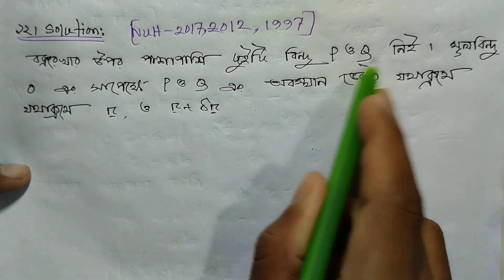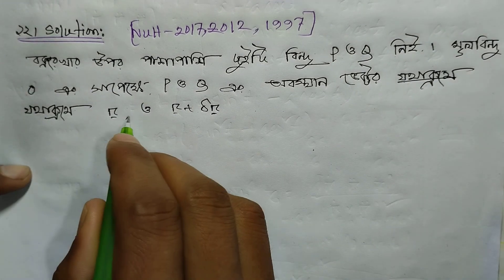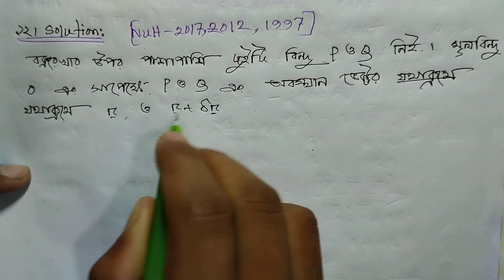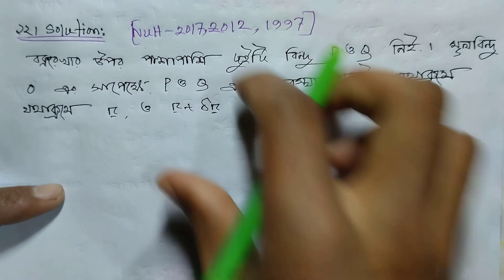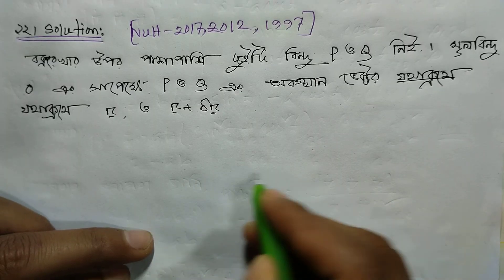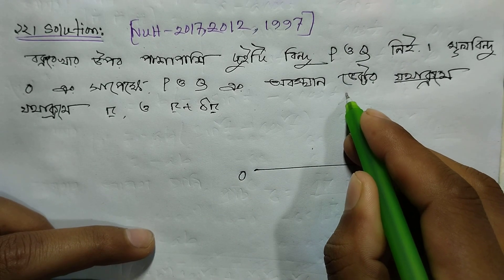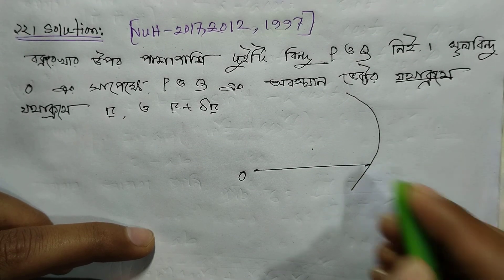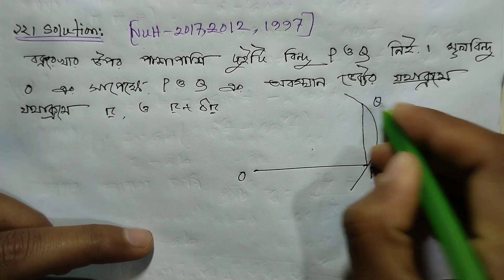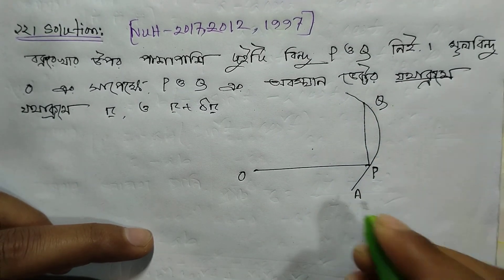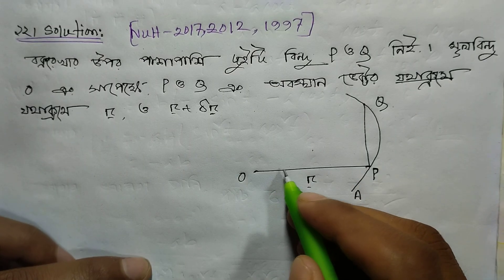We have written that on the curve there are two points P and Q, and the origin O. The shape of this curve has been given a name. The distance from the origin O to point P is R, and the distance from the origin O to point Q is also noted.